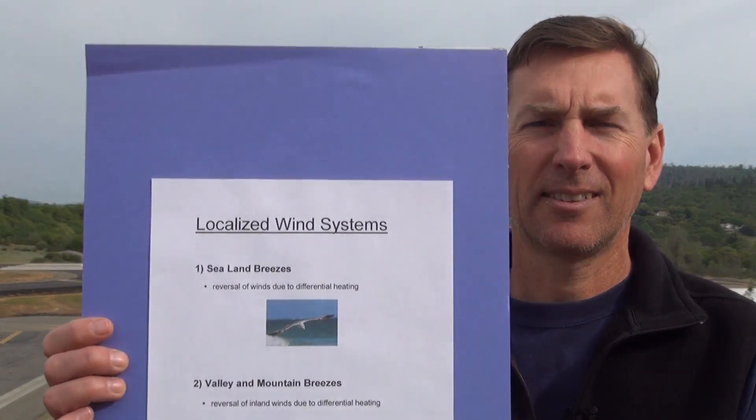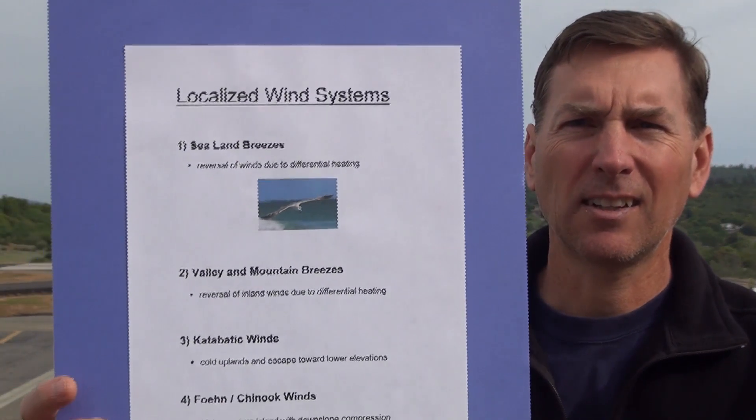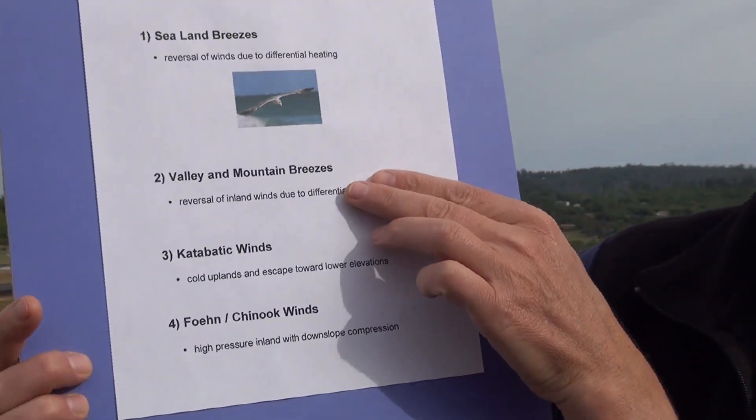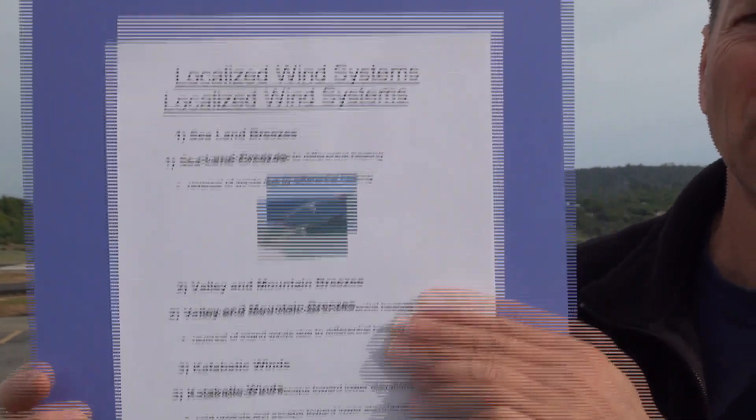Today I'm at the Auburn, California Airport and I want to talk about localized winds. Airports are typically aligned with the direction of localized winds, and as you can see on the diagram here, we're going to call them valley and mountain breezes.